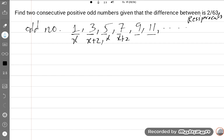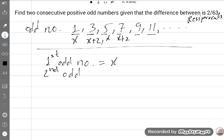So this is the concept. Let's start the solution according to the question. First odd number is equal to X. Second odd number is X plus 2.